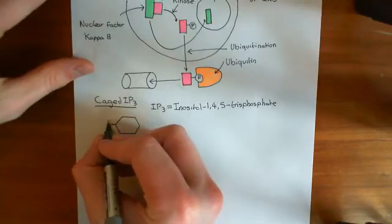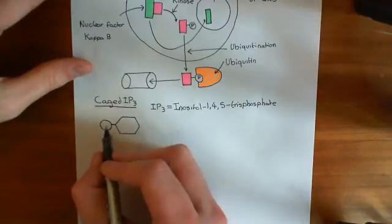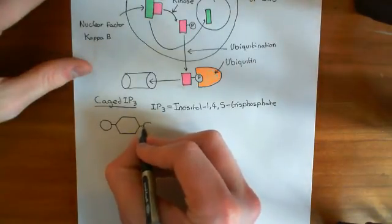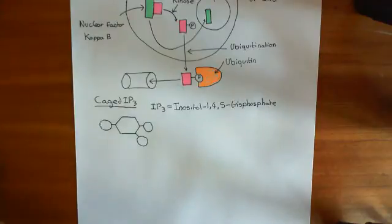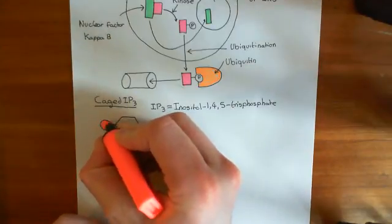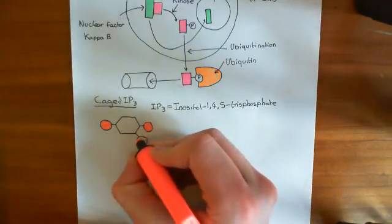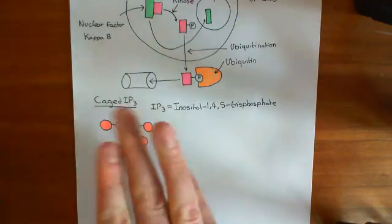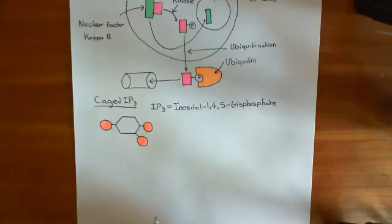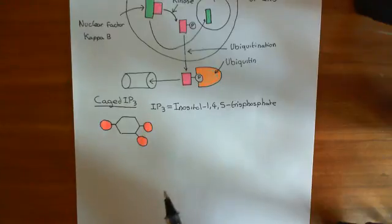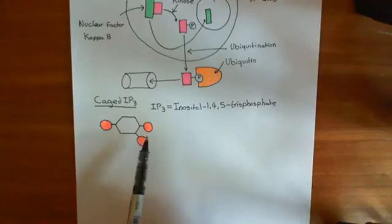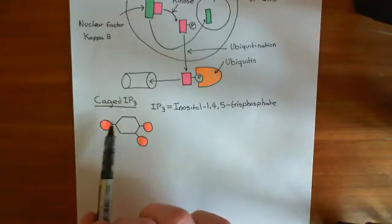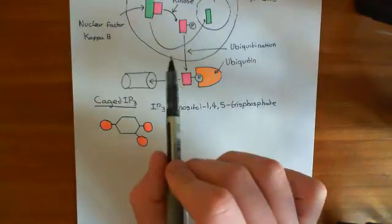We'll represent the phosphate groups with balls: here's the phosphate group of the first carbon, the fourth carbon, and the fifth carbon. That is a cartoon of inositol-1,4,5-trisphosphate. Now, how do you actually get this IP3 into a cell? The problem is these phosphate groups have a negative charge, so it's not easy to get this molecule through a phospholipid bilayer.